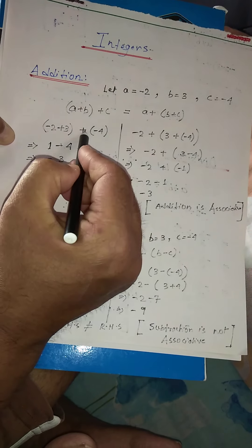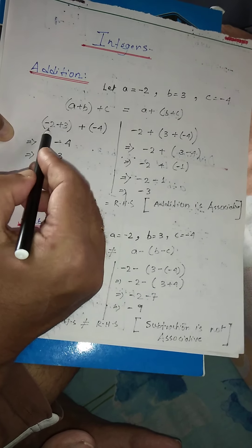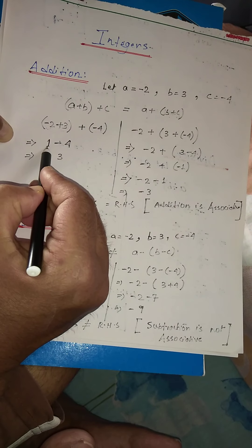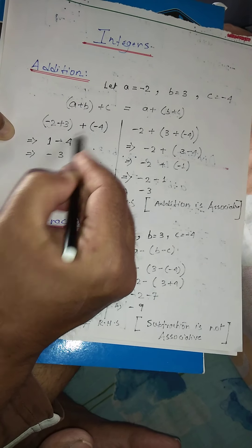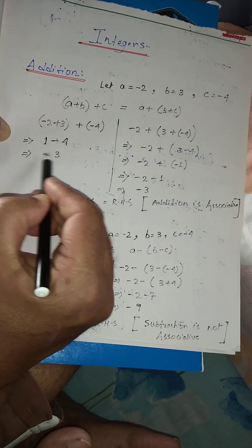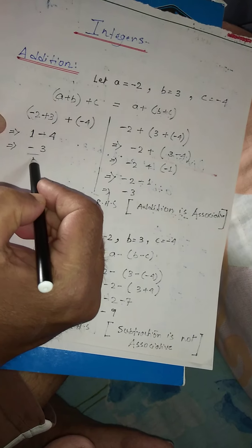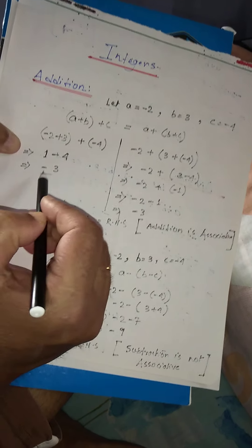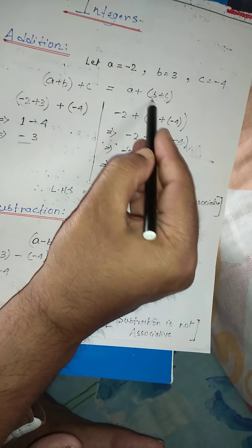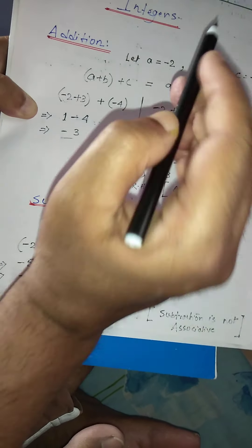In place of a I have written minus 2, in place of b is 3, plus in place of c minus 4. Let's solve the bracket first: minus plus is minus, so the answer is 1. Then plus minus is minus 4, so minus 1 gives 3... the answer is minus 3. So the left-hand side answer is minus 3. For the RHS, in place of a I have written minus 2, in place of b is 3, and in place of c I have written minus 4.